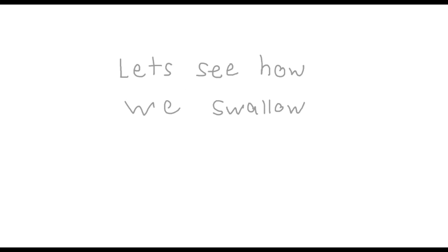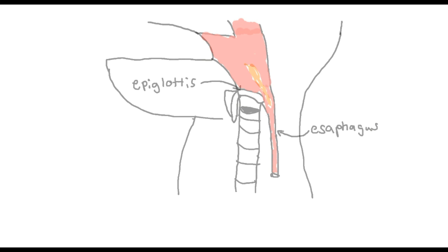Let's see how we swallow our food. The epiglottis is a flap that folds over the trachea to allow food pass down the esophagus. The epiglottis folds open to allow the air move in the trachea.